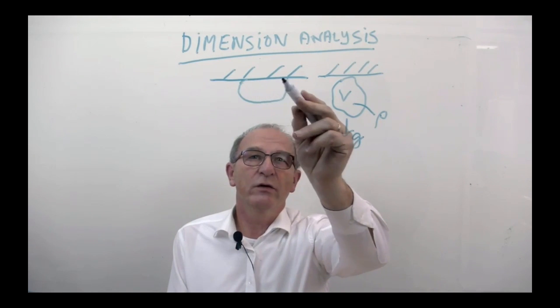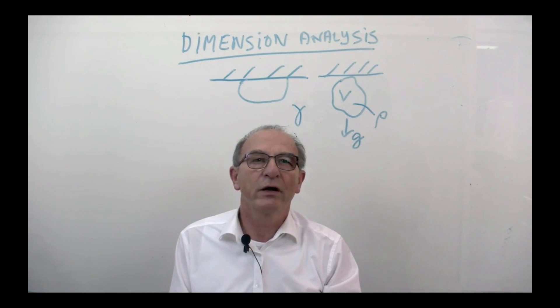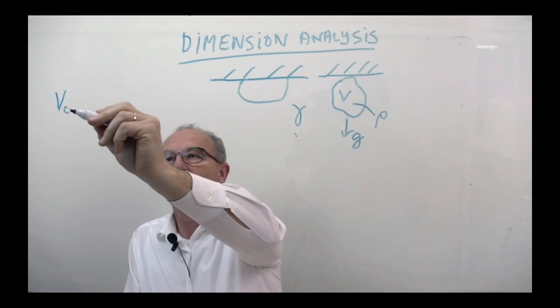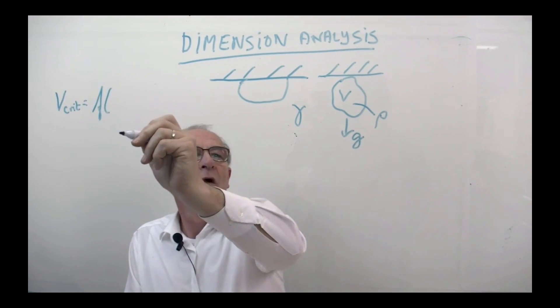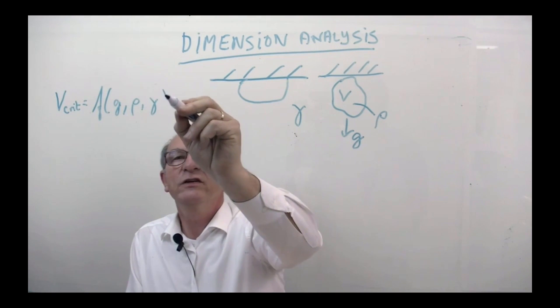And last but not least, why is the droplet staying on the ceiling? Because the surface tension is a really important parameter. So in this case you could say that the critical volume is a function of the gravity, the density, and the surface tension.